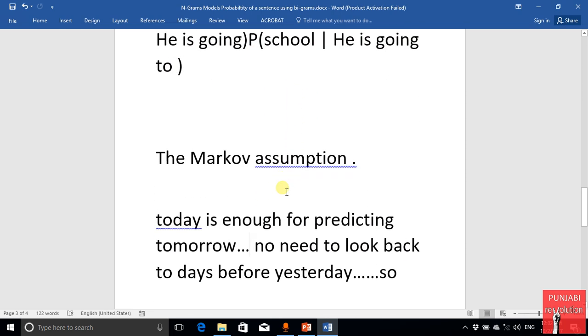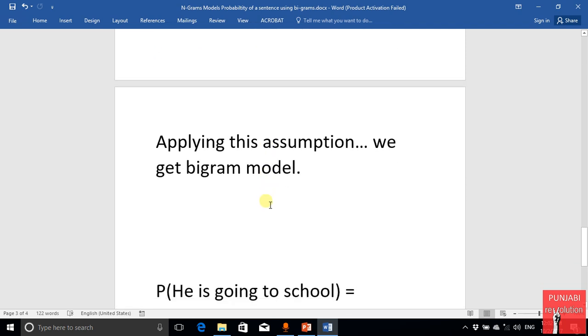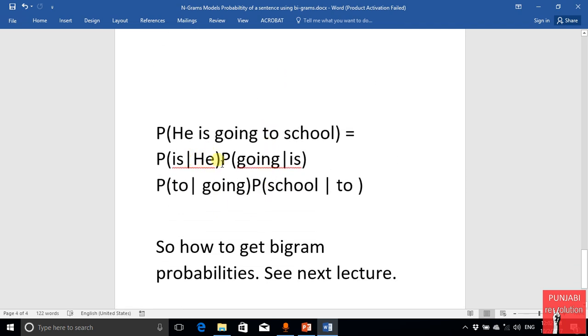So if we use the Markov assumption, the new formula becomes we will just look back one word and we will use a bigram model: probability of is given he, going given is, to given going, and school given to. So by this model we can predict the probability of the whole sentence.